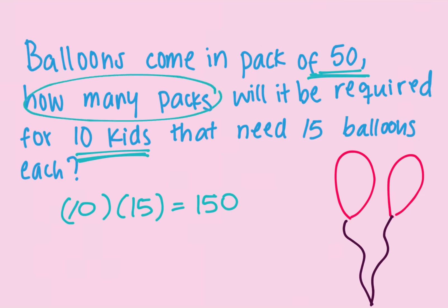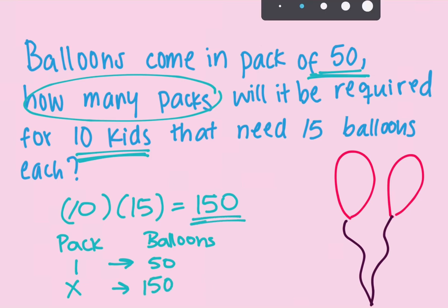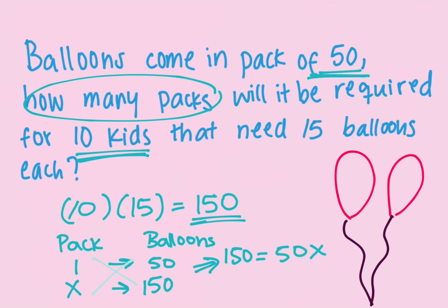They're asking about the packs, and we can use the box method. We set up packs and balloons: in one pack there are 50 balloons, and how many packs — our x — will we need for 150 balloons? Cross multiply: 150 multiplied by 1 is 150, and 50 multiplied by x is 50x. So x equals 150 divided by 50, which equals 3. We need to buy three packs.